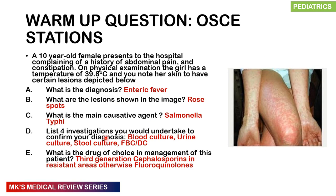Coming back to our warm-up OSCE station: a 10-year-old girl presents with abdominal pain and constipation, temperature of 39.8°C, with skin lesions. The diagnosis is enteric fever. The lesions are rose spots. The main causative agent is Salmonella typhi. Four investigations: blood culture, urine culture, stool culture, FBC and differential count — you can also do an ESR. The drug of choice: third-generation cephalosporins in resistant areas; otherwise, fluoroquinolones.